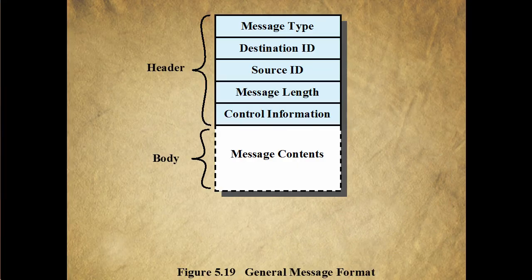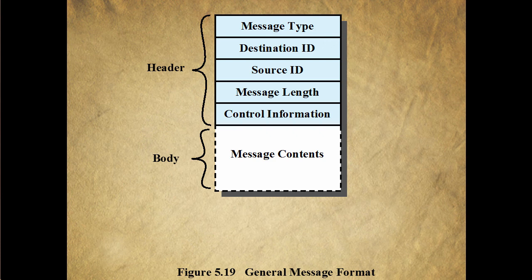The format of the message depends on the objectives of the messaging facility and whether the facility runs on a single computer or on a distributed system. For some OSs, designers have preferred short, fixed-length messages to minimize processing and storage overhead. If a large amount of data has to be passed, the data can be placed in a file and the message then simply references that file. A more flexible approach is to allow variable-length messages. This figure shows a typical message format for OSs that support variable-length messages. We divide the message into two parts: a header and a body. The header contains meta-information about the message itself, including identification of the source and intended destination, the length, and a type field to discriminate among various types of messages. Additional control information can include a pointer field so a linked list of messages can be created, a sequence number to keep track of the number and order of messages passed between source and destination, and a priority field. The body simply contains the actual contents of the message.